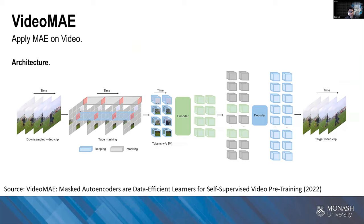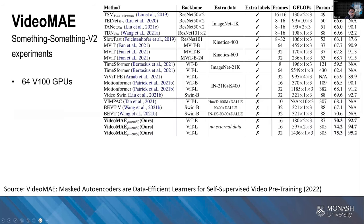The next work is Video MAE, which applies MAE to video. The architecture is very similar — the main difference is that input video is tokenized as cubes rather than patches. A patch is a 16×16 small image region, but for Video MAE they use cubes of size 2×16×16, which contain temporal information. They ran experiments on large-scale datasets using 64 GPUs, and Video MAE also beats previous works with a noticeable gap.